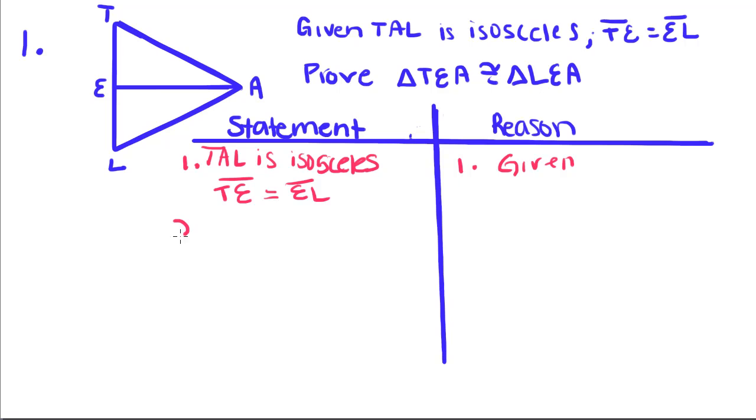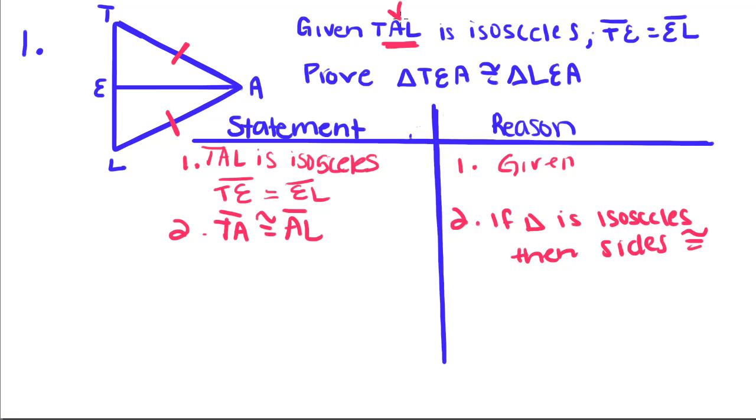The first thing we can do: since we're told that TAL is isosceles, that means this has to be equal to this. So TA is congruent to AL. If a triangle is isosceles, then sides are congruent. Because A is the vertex angle of the isosceles triangle, that means TA and AL have to be congruent.